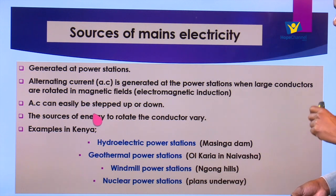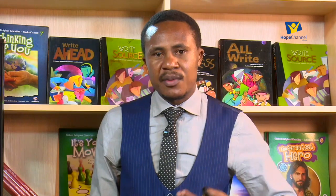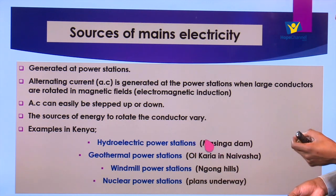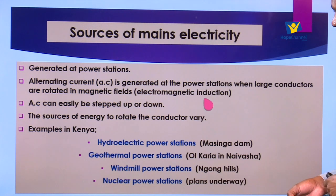The AC current fed into the transmission grid is generated at the power plants, where large conductors are made to rotate inside magnetic fields, producing an induced EMF. The source of energy used to rotate the conductor varies. Examples in Kenya include hydroelectric power stations — hydro meaning water. The Masinga power plant is situated on Masinga Dam. Hydroelectric power stations use the potential energy of water; when converted into kinetic energy, it rotates the conductors and electromagnetic induction takes place.